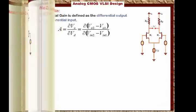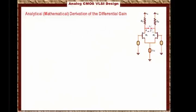Now we are ready to do the analytical, which means mathematical, derivation of the differential gain. Now there are two major methods that are used to define the differential gain. One is called the large signal analysis, and the other one is the small signal analysis, or the AC gain.